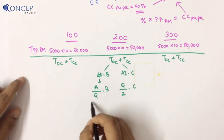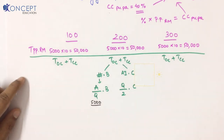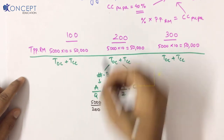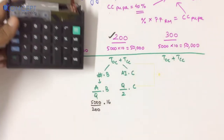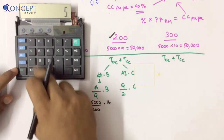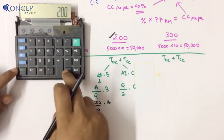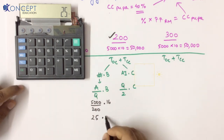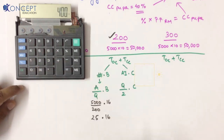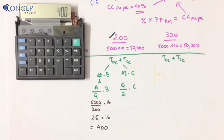My annual requirement is 5000 units. I am ordering 200 units at a time — that is the 200-unit level we are studying. Ordering cost per order is ₹16. So number of orders = 5000 ÷ 200 = 25 orders. Total ordering cost = 25 × 16 = ₹400.